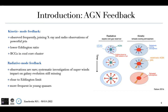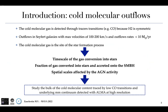Therefore, we want to study the cold molecular outflows. The cold molecular gas is detected through tracer transitions such as CO(1-0), because the H2 molecule is symmetric. Outflows in Seyfert galaxies such as the ones we will study show maximum velocities between 100 to 1000 km/s and outflow rates below 10 solar masses per year. We want to study the cold molecular gas because it is the site of the star formation process, and we want to quantify the timescale of gas conversion into stars, the fraction of gas converting into stars and accreted onto the supermassive black hole, and the spatial scale affected by the AGN activity.